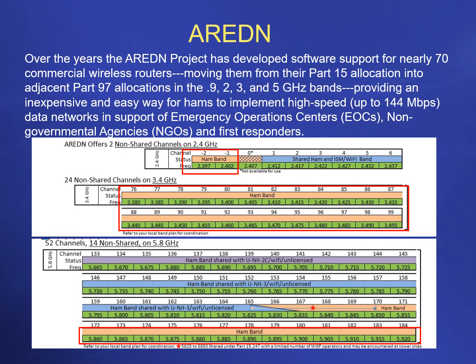The ARDEN project has developed software support for 70 commercial wireless routers, just like you'd use in your home, moving them from the Part 15 allocation into Part 97 for amateurs. It has been instrumental in getting some bandwidth allocated on 900 megahertz, 2 gigahertz, 3 gigahertz, and 5 gigahertz bands, creating an inexpensive way for hams to implement high-speed internet up to 144 meg data networks in support of emergency operations — not only at EOCs, but throughout your local area — using common off-the-shelf hardware.